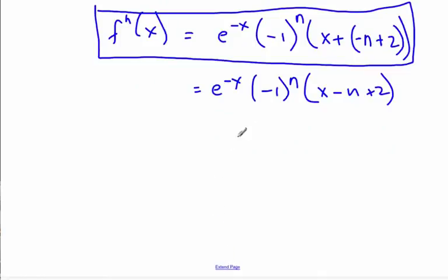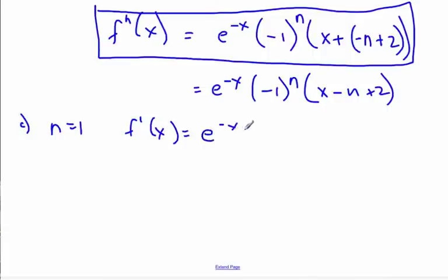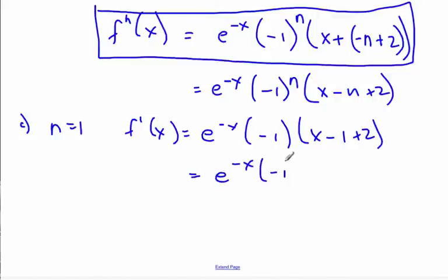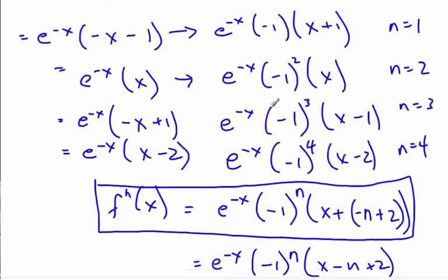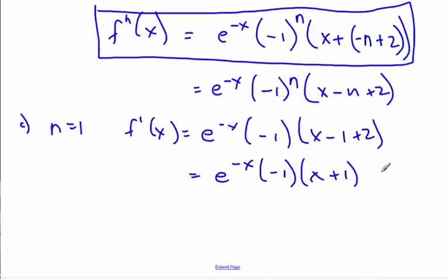Now I'm going to prove this by induction. You should try it yourself before watching. Starting with n equals 1 as the base case: plugging in n equals 1 gives e to the minus x times negative 1 times x minus 1 plus 2, which is e to the minus x times negative 1 times x plus 1. This is indeed true.